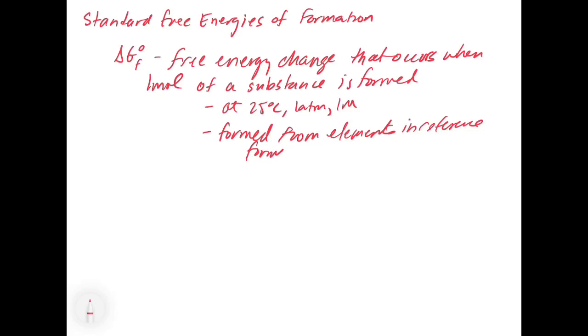So what does that mean? Elements in their reference form. That means that basically you take an element as it would be at 25 degrees Celsius and one atmosphere. So like oxygen would be oxygen gas, bromine would be bromine liquid, iron would be iron solid. So they have to be formed from the pure elements at one atmosphere and 25 degrees Celsius. These are all tabulated in table 18.2. So you can find these values. And you'll notice that the delta G not F for pure elements is equal to zero.